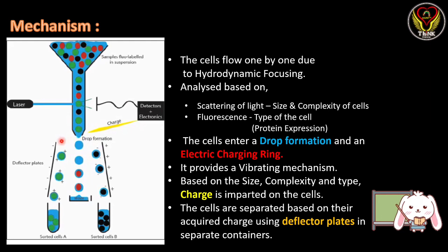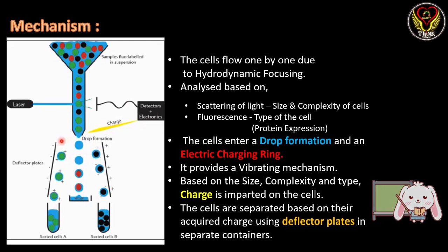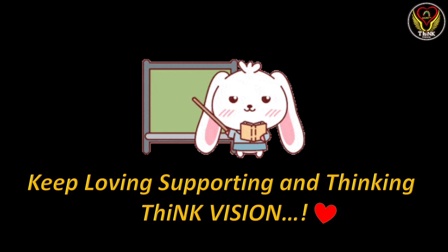To summarize: a mixture of cells passes one by one due to hydrodynamic focusing and is analyzed based on scattering and fluorescence properties. This data is recorded by the detector. The cells then pass down and, due to a vibration mechanism, are released in a dropwise manner. Based on scattering and fluorescence properties, different cells get charged differently — this can be programmed. The charged cells enter the electric charging ring where deflector plates attract oppositely charged cells and collect them separately. This is the mechanism of FACS.